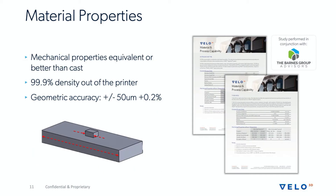Material properties are better than or equivalent to cast. We can print as-printed 99.9% density, as well as achieve a geometric accuracy of plus or minus 50 microns on small features. Large features are printed within 0.2% of the nominal dimension.